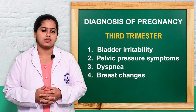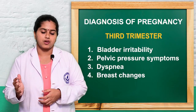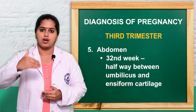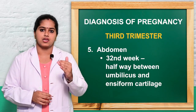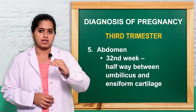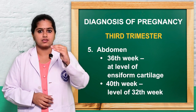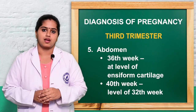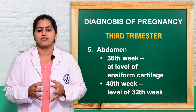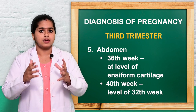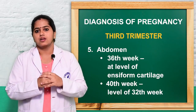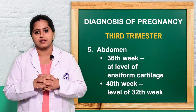Breast changes include increased size and symmetry, with prominent primary and secondary areola, Montgomery's tubercles, and thick secretion of colostrum. Abdominal growth is assessed by fundal height: at 32 weeks it is midway between the xiphoid and the umbilicus; at 36 weeks it reaches the xiphoid cartilage. At 40 weeks, lightening occurs — a dropping or shelving of the fetus — and the fundal height drops back to the level of 32 weeks, relieving the mother of respiratory discomfort.